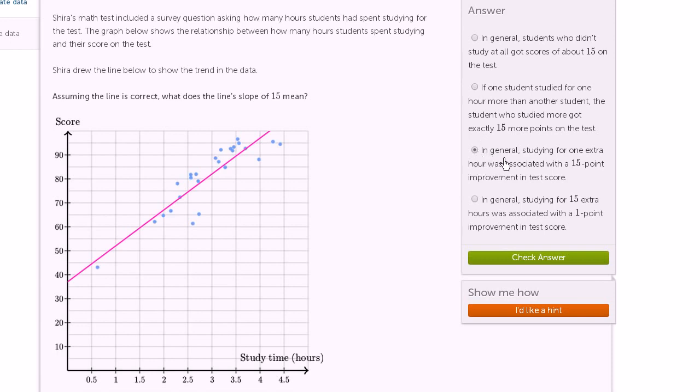Let's try this choice. In general, studying for one extra hour was associated with a 15-point improvement in test score. That feels about right. In general, studying for 15 extra hours was associated with a one-point improvement in test score. Well, no, that would get the slope the other way around. Let's check our answer and we got it right.